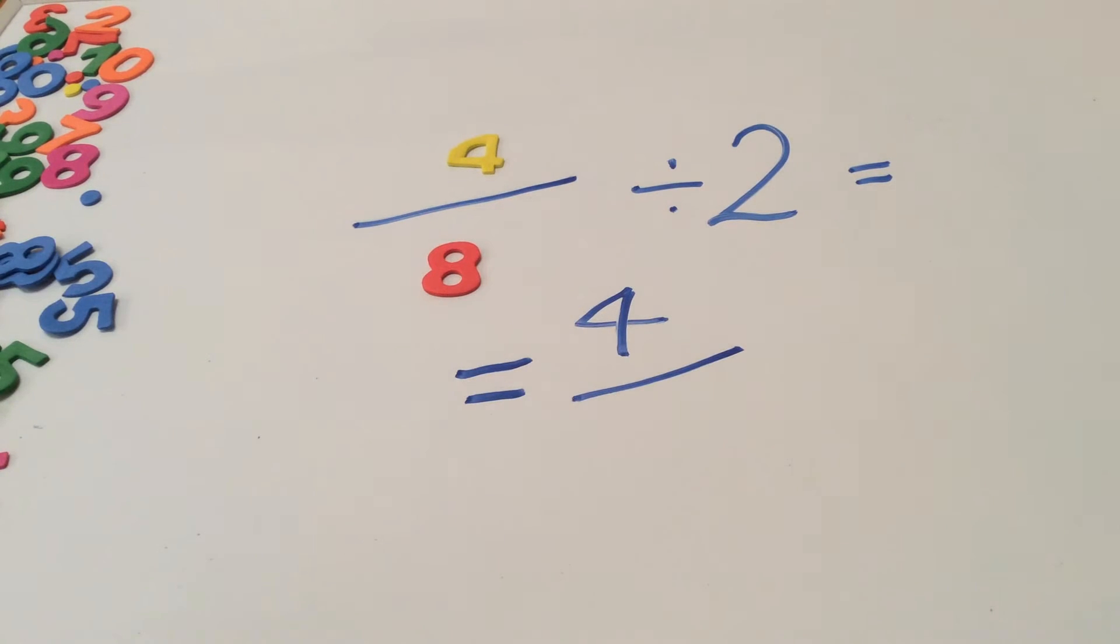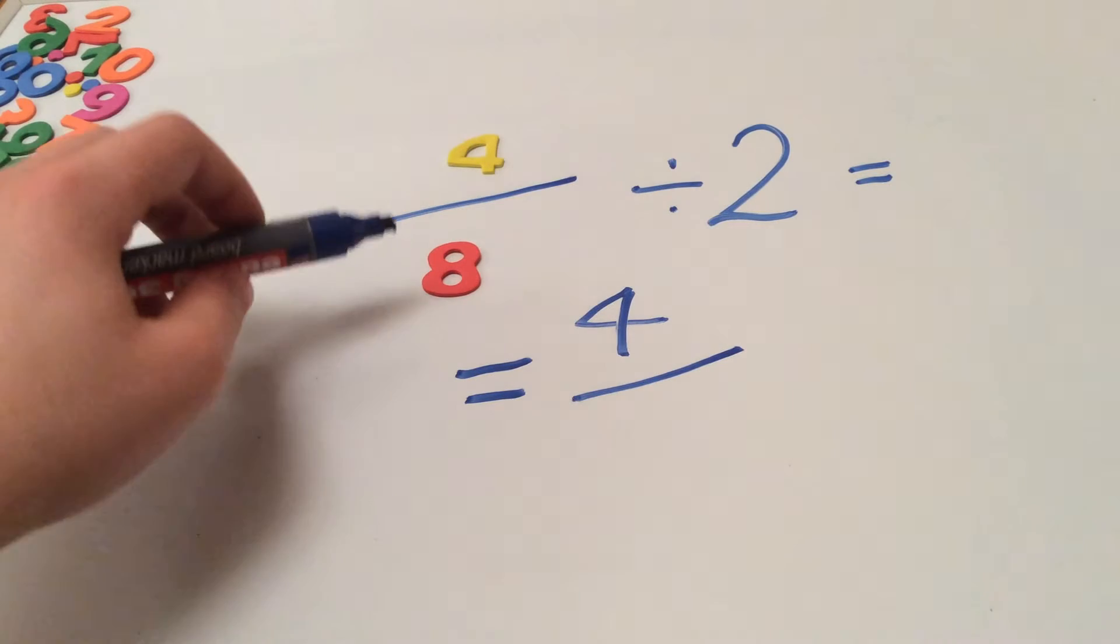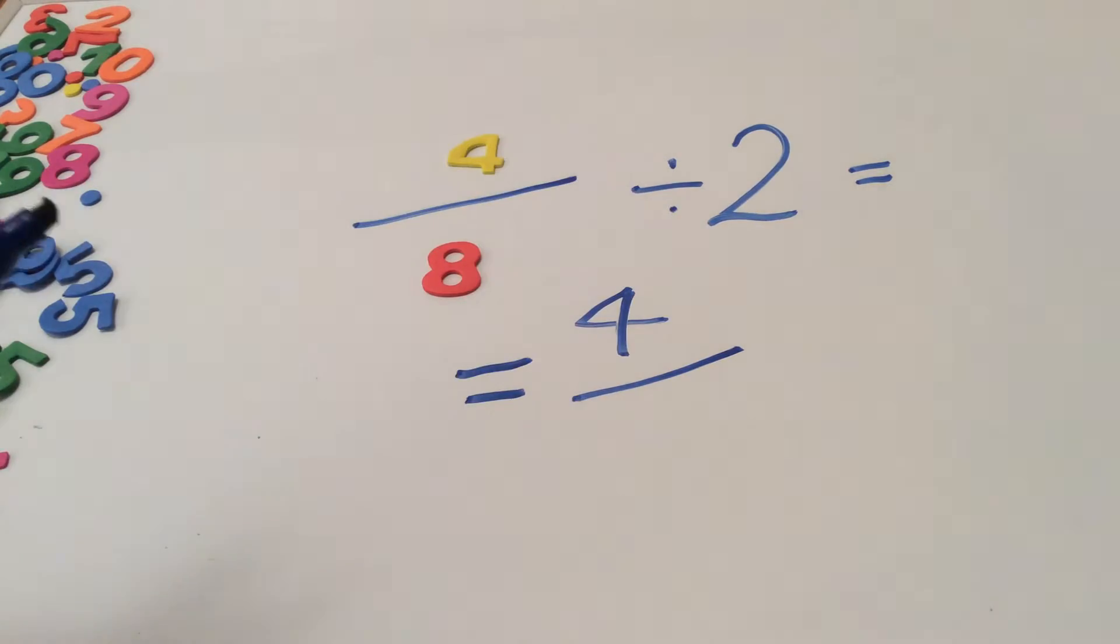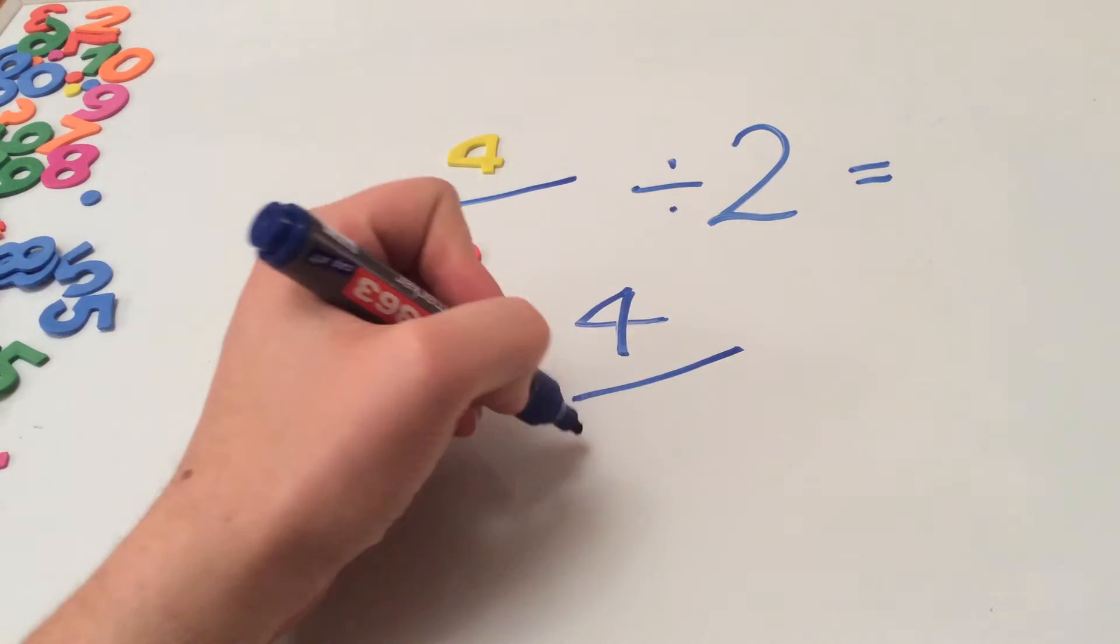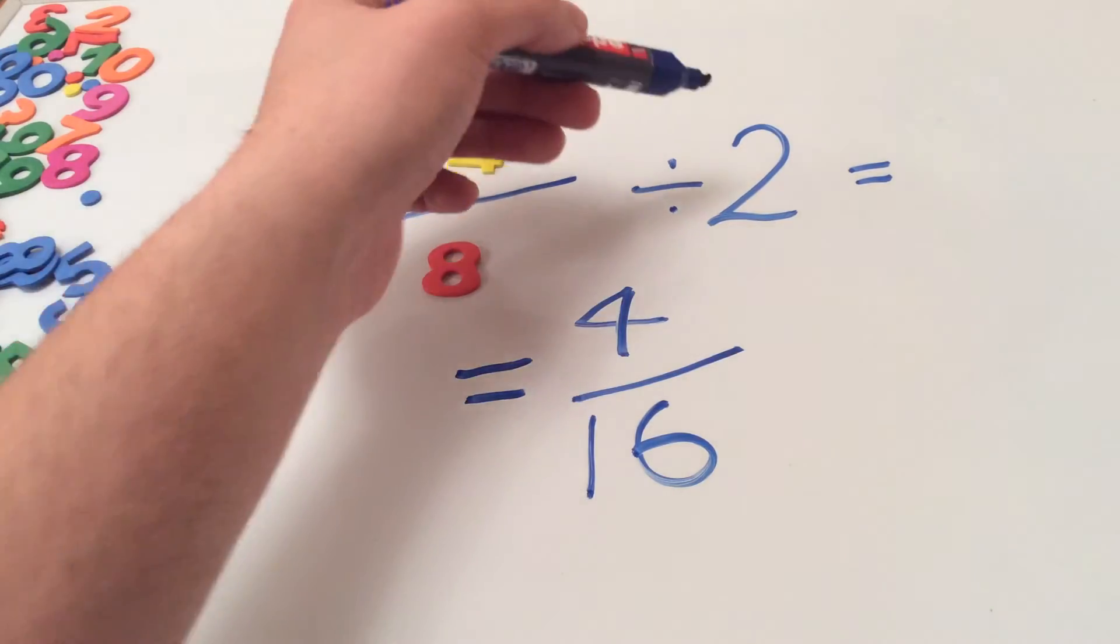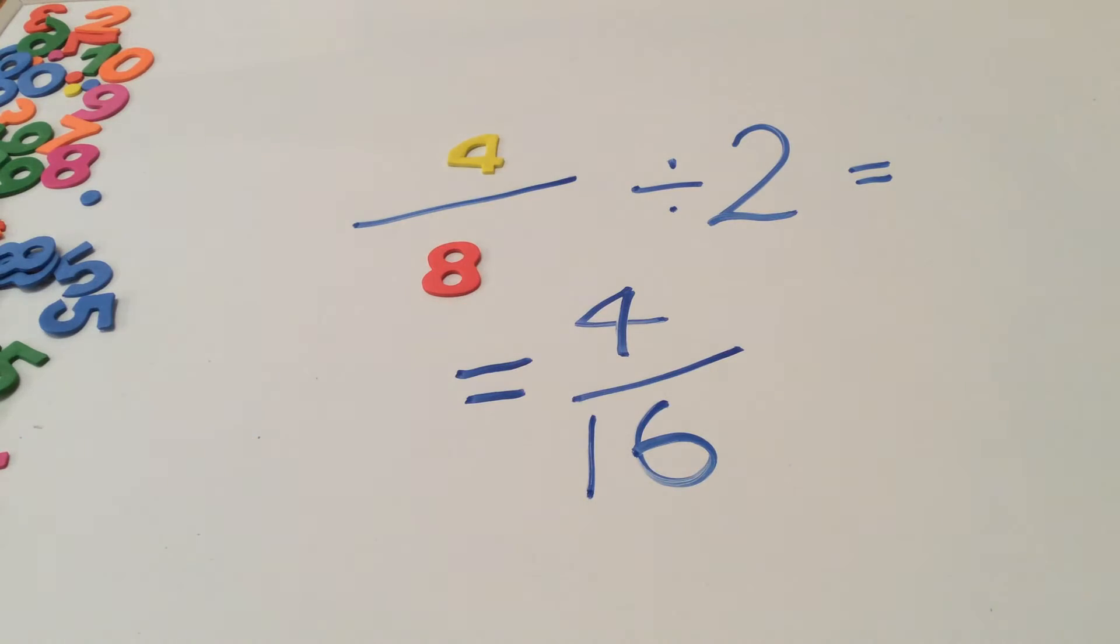To calculate our denominator all we have to do is look at the denominator here and multiply it by the big number. So 8 multiplied by 2 equals 16. So 4 eighths divided by 2 equals 4 sixteenths.